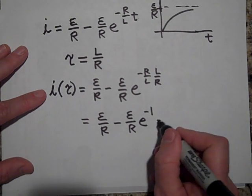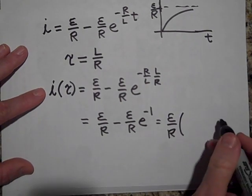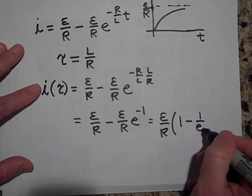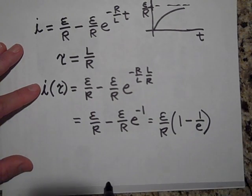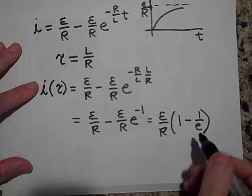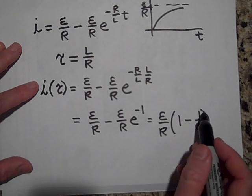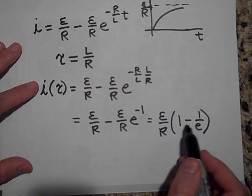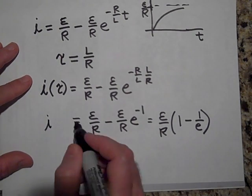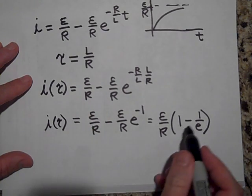Well, that's the same thing if—let me factor out the ε over R. That's the same thing as one minus one over e. Now, e is about three, it's 2.7 and keeps going forever, and so it's about three.